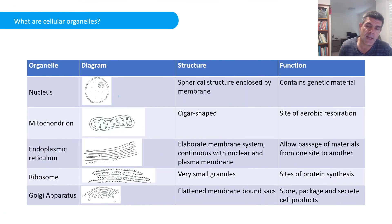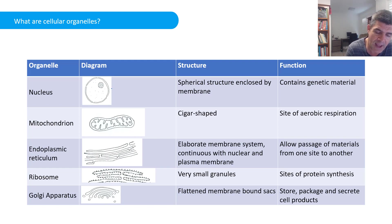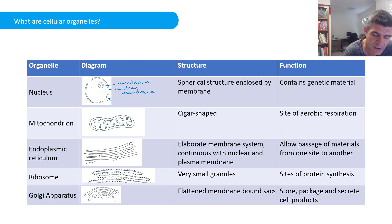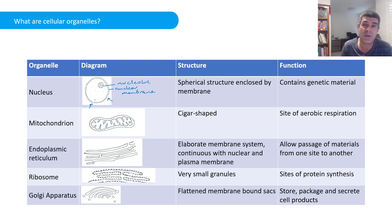Eukaryotic cells will have a nucleus. The nucleus will also have a nuclear membrane, often a nucleolus, as well as nuclear pores — you can see some of the little pores here. Like all membranes, they are selectively permeable, allowing material to move in and out.